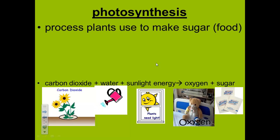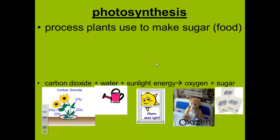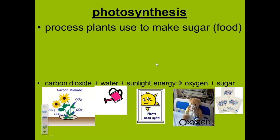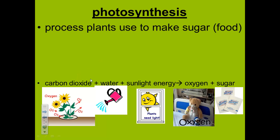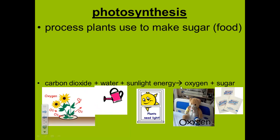In photosynthesis, carbon dioxide and water are used to make sugar and oxygen. Plants are a major source of oxygen in the atmosphere. Sunlight supplies the energy needed for photosynthesis. This process of photosynthesis is often written like this: carbon dioxide plus water plus sunlight energy produces oxygen and sugar.